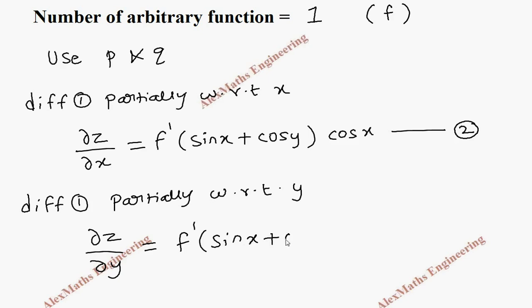Using the chain rule, this inner function should be differentiated partially with respect to y. So sin x is treated as a constant, and the derivative of cos y is -sin y. This is our third expression.